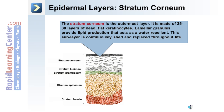The stratum corneum is made up of approximately 25 to 30 layers of dead flat keratinocytes. Lamellar granules provide lipid production that acts as a water repellent for this layer. This sub-layer is continuously shed and replaced throughout life.